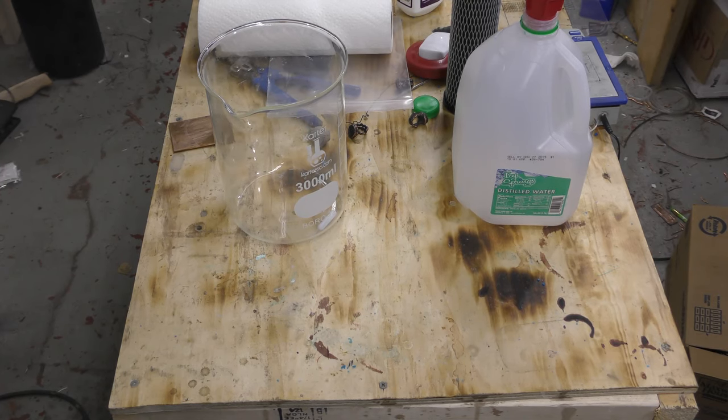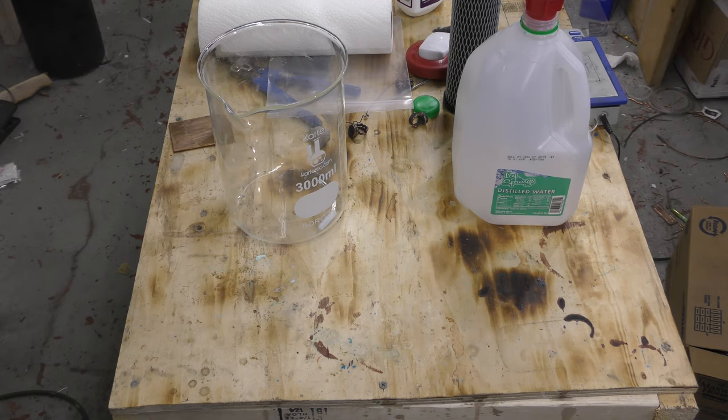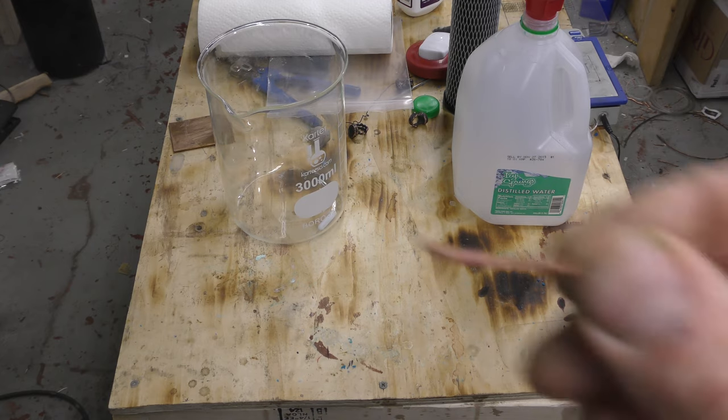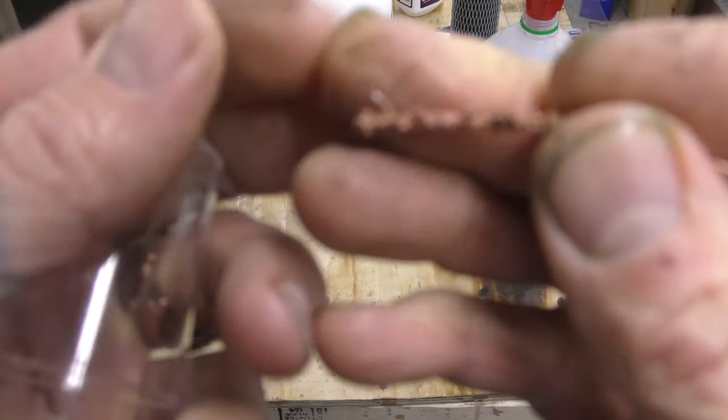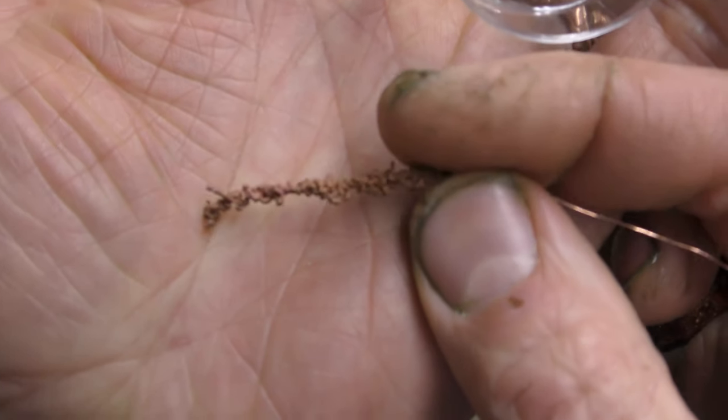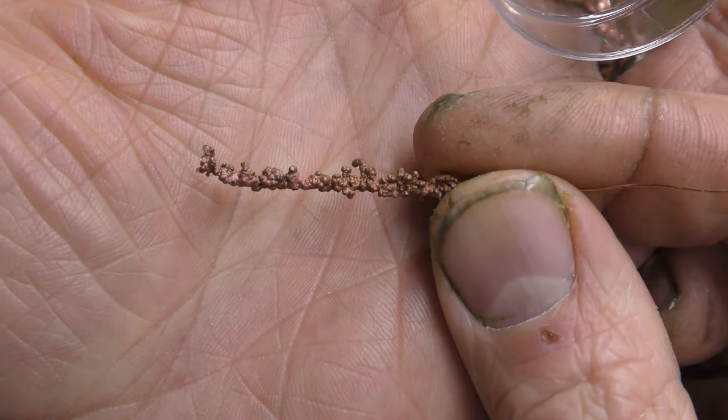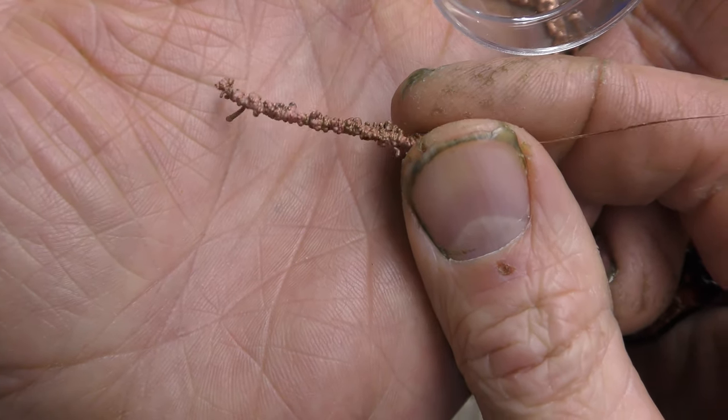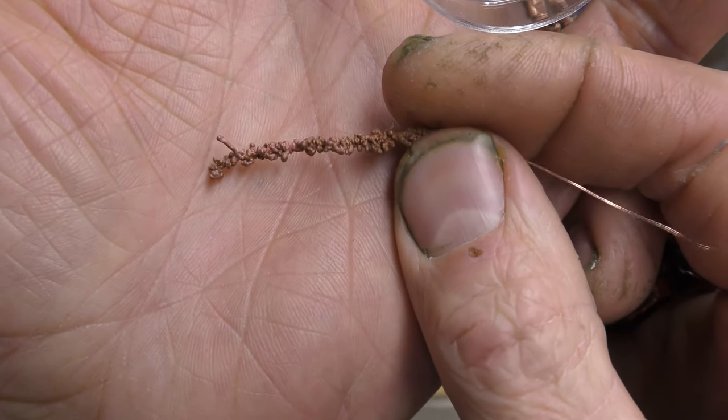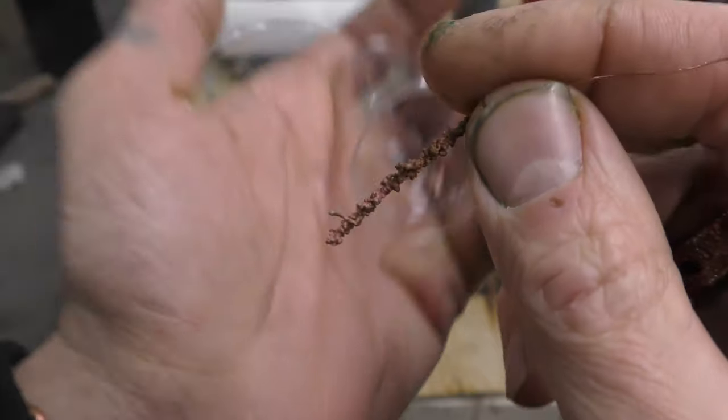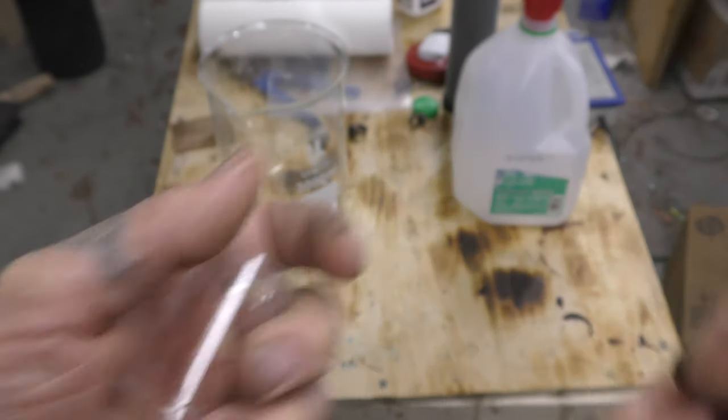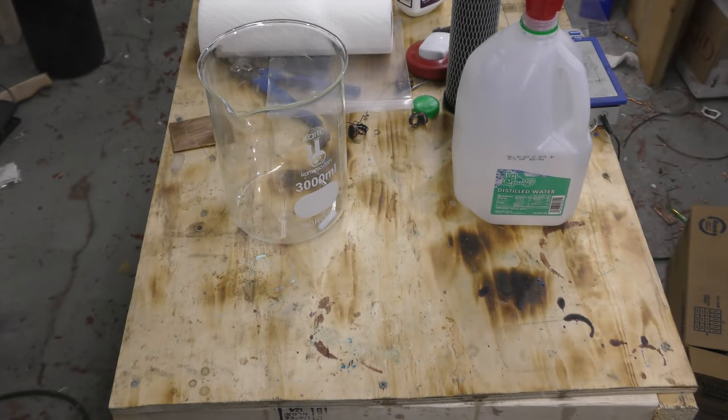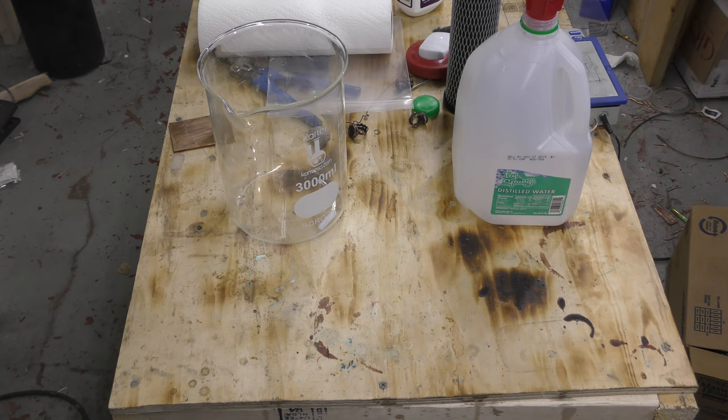All right, today we're going to be looking at carbon filtering. Why would you carbon filter? If you have these little guys hanging out on your wires, it's probably a good idea to carbon filter. These guys form as impurities in your tank and are usually hanging out on your wires.